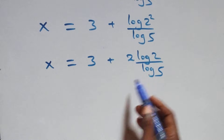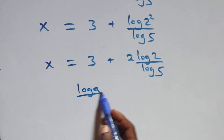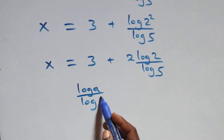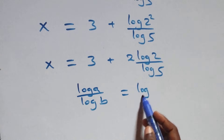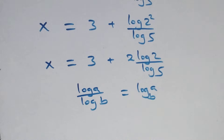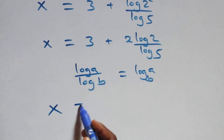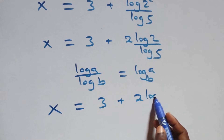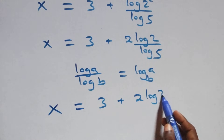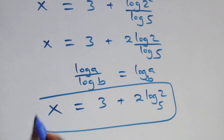We apply the change of base formula. When we have log a over log b, it is the same thing as log a to base b. Here we have x equals to 3 plus 2 log 2 base 5. That is the value of x.